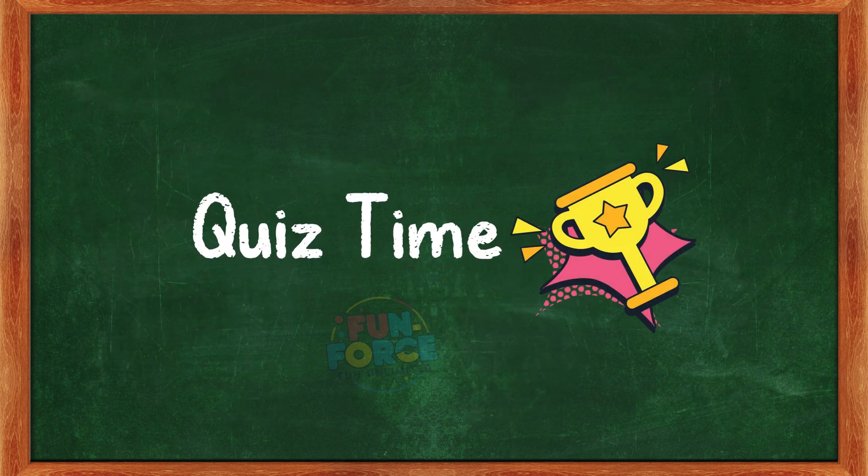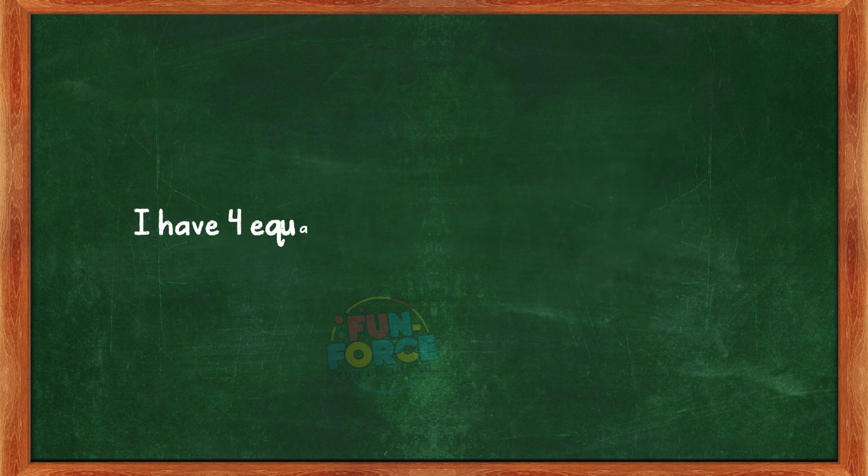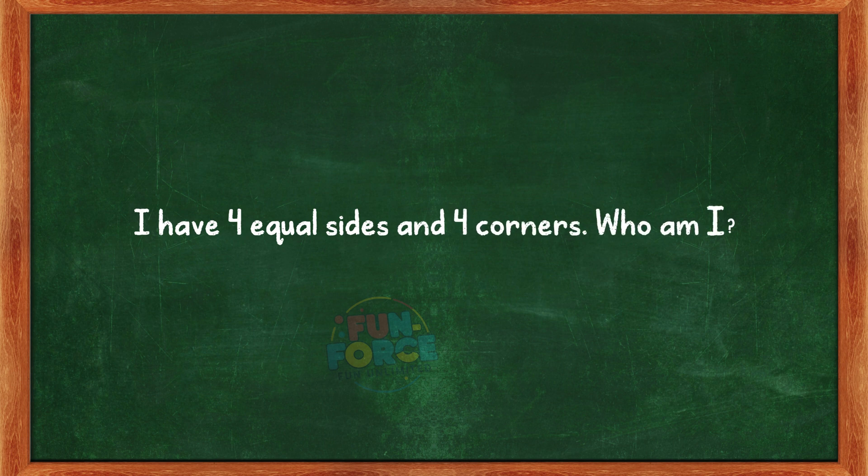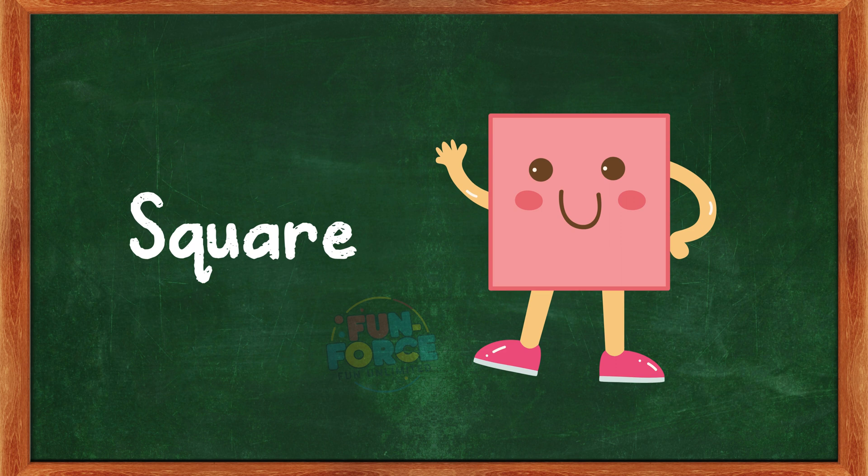Quiz time. Now, let's play a fun game. I will describe myself, and you try to guess who I am. I have four equal sides and four corners. Who am I? That is correct. I am a square.